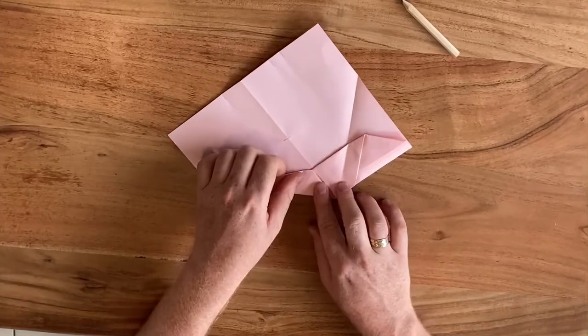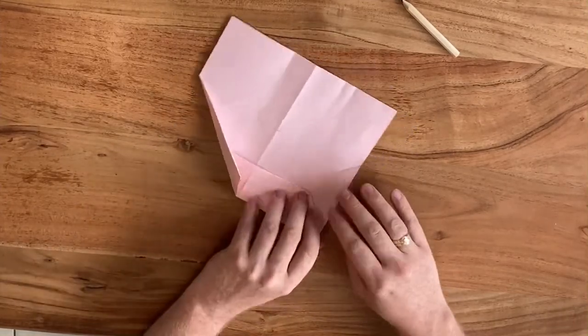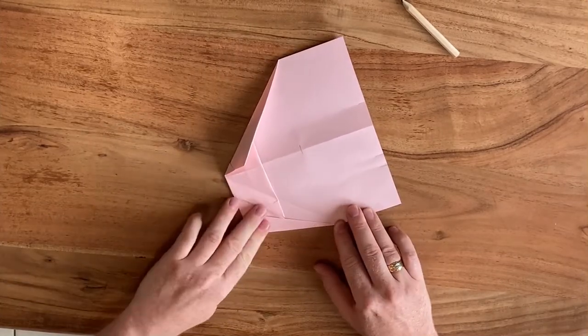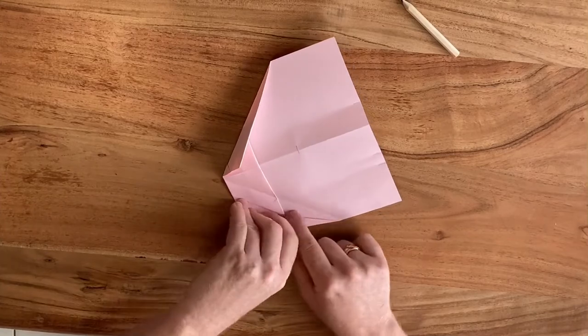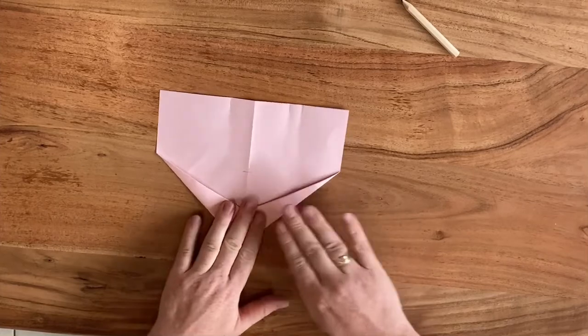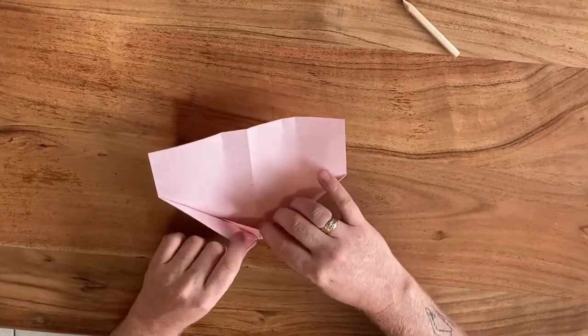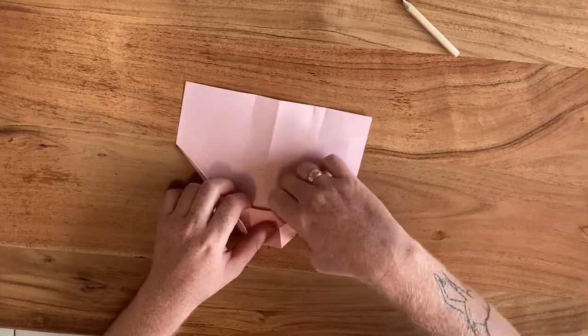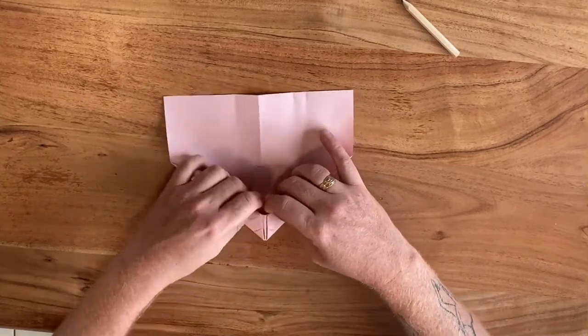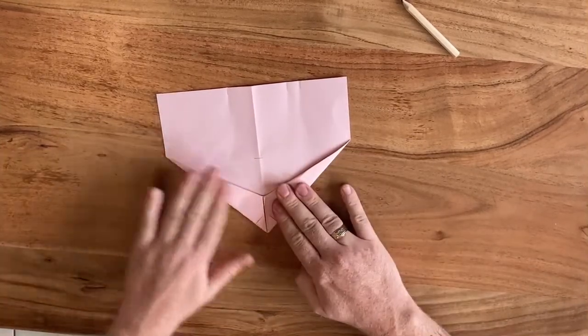And then you're going to crease it once more towards the center crease. Then we're going to do the same thing on the other side. Fold it but not all the way to there. Roll it up once more, and then the last time towards the center crease. Now you can see that these corners are perfectly aligned with this little pocket below. So what we want to do is put these inside the pockets on both sides. And that will make sure these layers stay in place nicely.